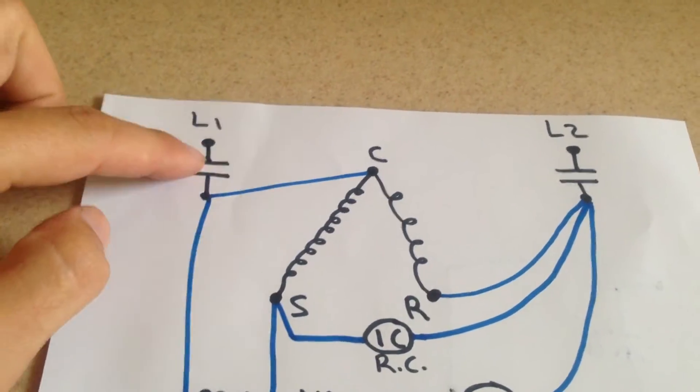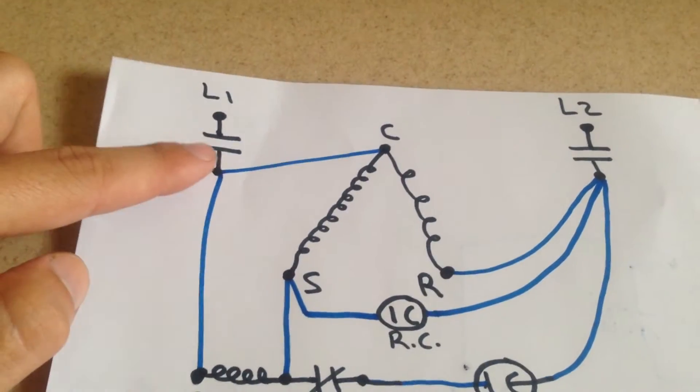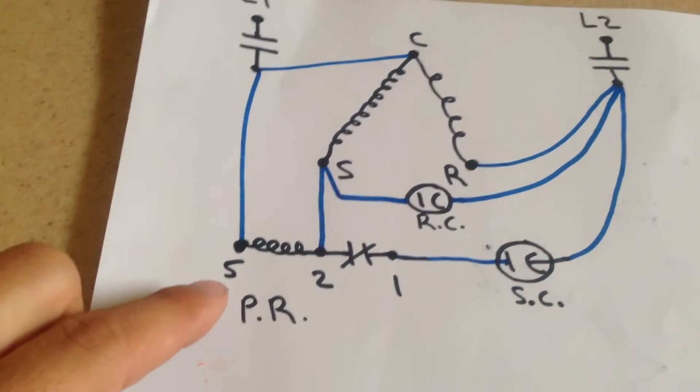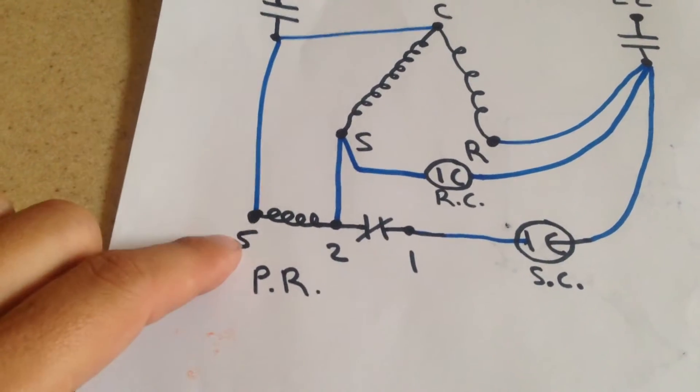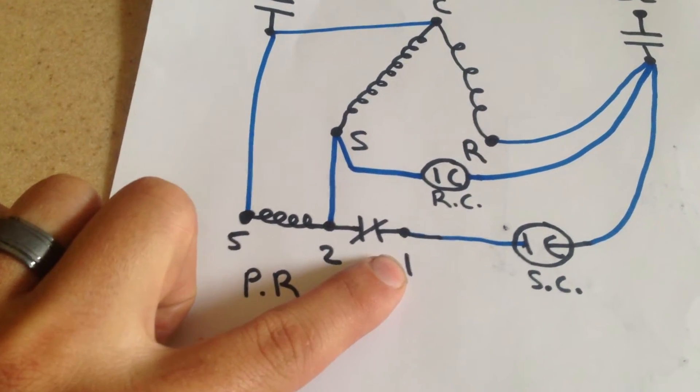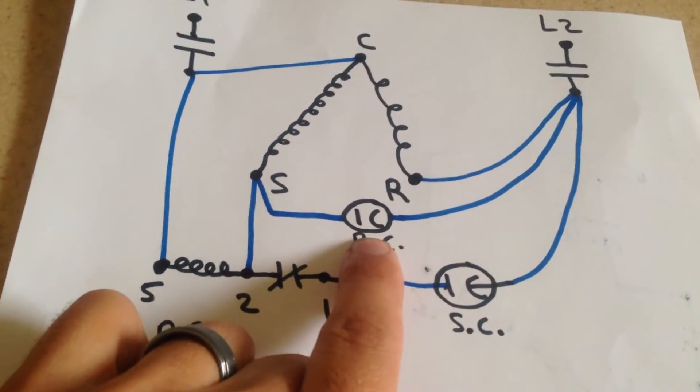Up here is our contactor right here, which is normally open contacts, L1 and L2. And here's our potential relay at the bottom with 5, 2, and 1 terminals. Start capacitor and our run capacitor.